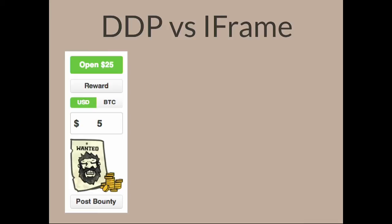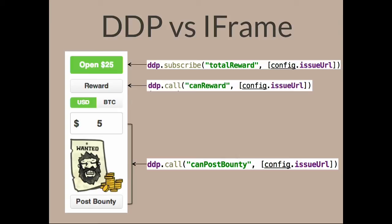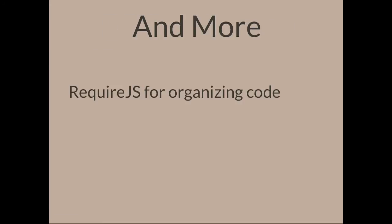We use DDP in several ways. We subscribe to the total reward, and whenever that changes we update how much money is on a certain issue. We also use two server methods: a canReward function that checks if you can reward a bounty, and a check for whether you can post a bounty at all — so if an issue is closed, you can't place a bounty. On our back end we call the GitHub API to figure that out. We also use an iframe: when you're going to reward the bounty, this is actually the Meteor app running in an iframe so we can use all of Meteor's reactivity.